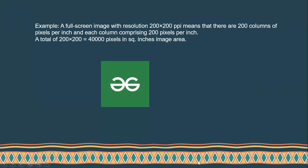If you take a full-screen image with a resolution of 200 by 200 pixels per inch, that is the height and width of the image in pixels. This image has a height of 200 and a width of 200 pixels. That means 200 columns, each consisting of 200 pixels. The total pixels present in this image are 40,000 pixels per square inch. This is essentially what image resolution means.